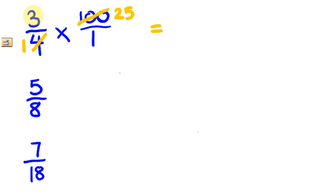So now we just multiply these straight across: 3 times 25 is 75, and 1 times 1 is 1. Now we are left with 75 divided by 1, which is our answer: 75%.